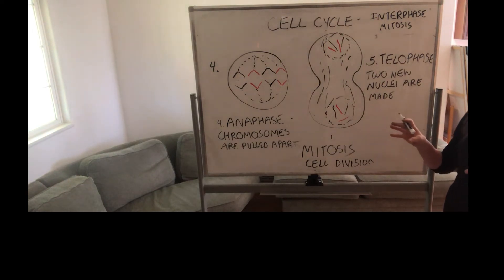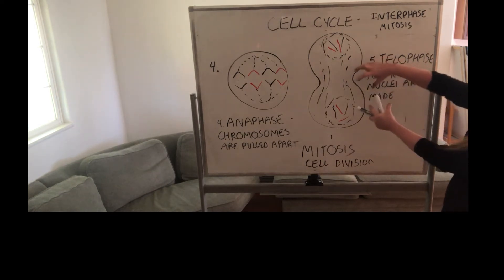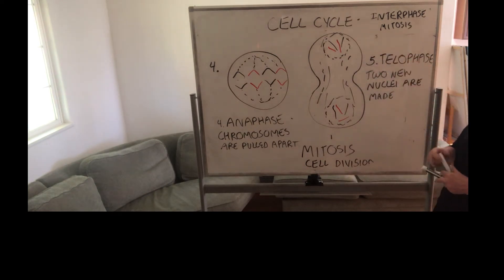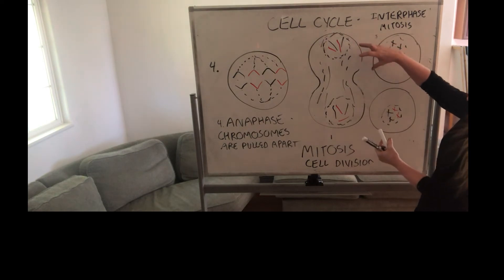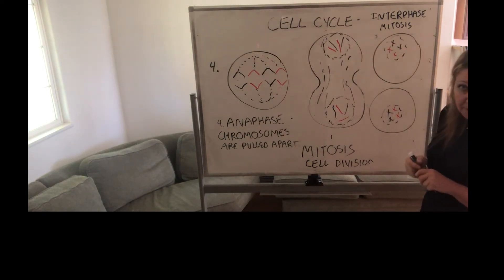And sometimes you see the very last part included in telophase, and sometimes it's considered a separate phase. But the final part of the cell cycle is when these two actually separate and form two new cells. So this process in which the cytoplasm splits is called cytokinesis.